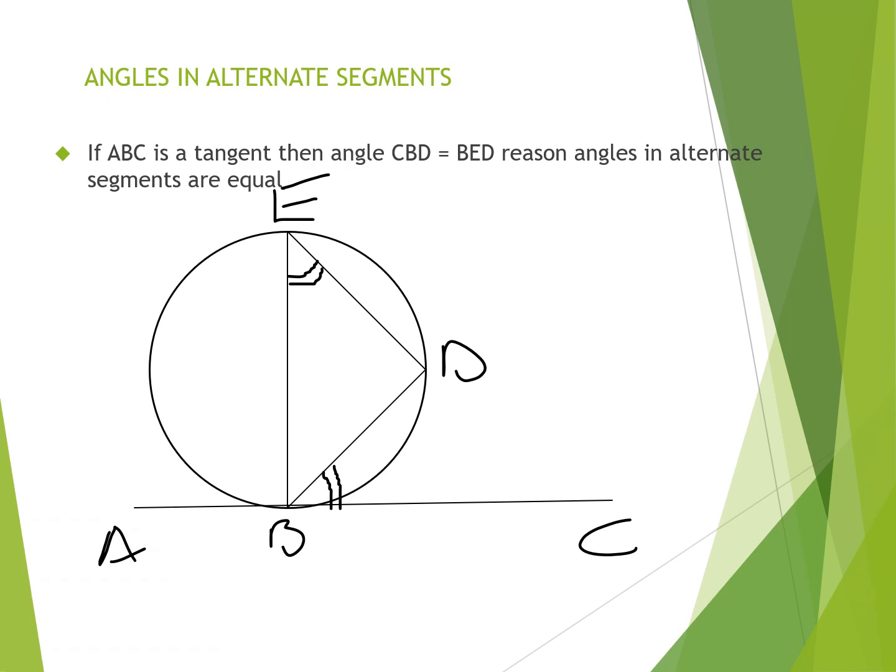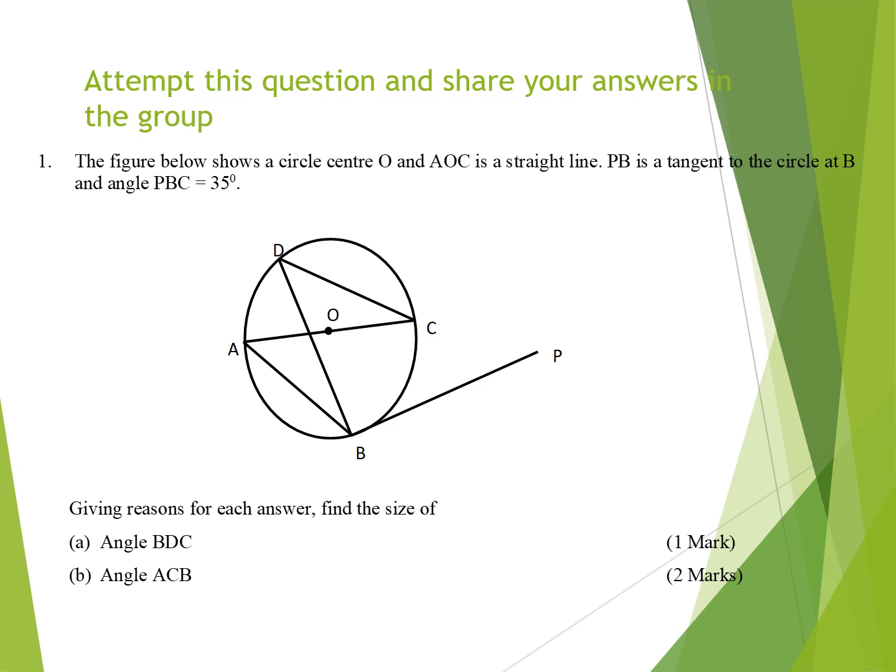I would like you to attempt this question: in the figure, circle centre O has chord AC, and straight line BB is a tangent at B. Given angle PBC equals 35°, find — giving reasons — the size of angle BDC and angle ACB. Pause, do the question, and post your answer in the group. If someone has already posted the same answer, just say you agree and we move on.